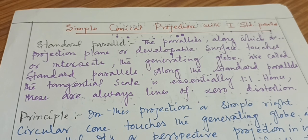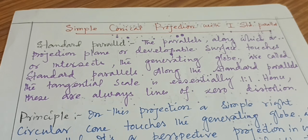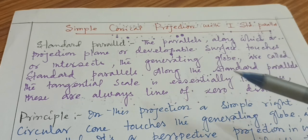I'm starting with the standard parallel because from the heading itself you can see it is written as 'simple conical projection with one standard parallel.' So before we start the projection we should understand what is actually the standard parallel. The standard parallel is the parallel along which a projection plane or developable surface touches or intersects.